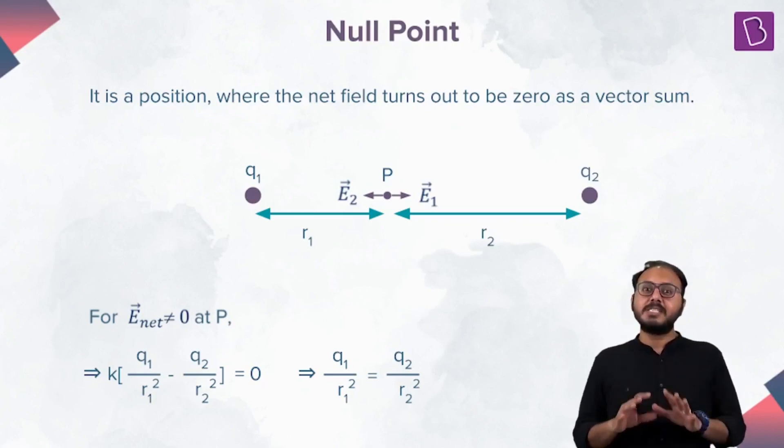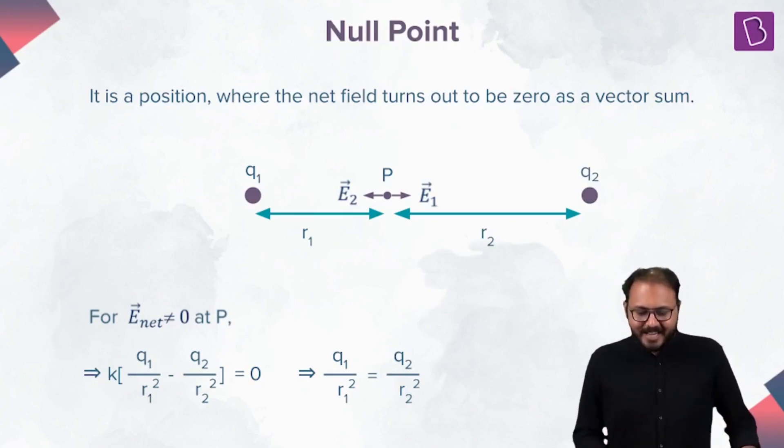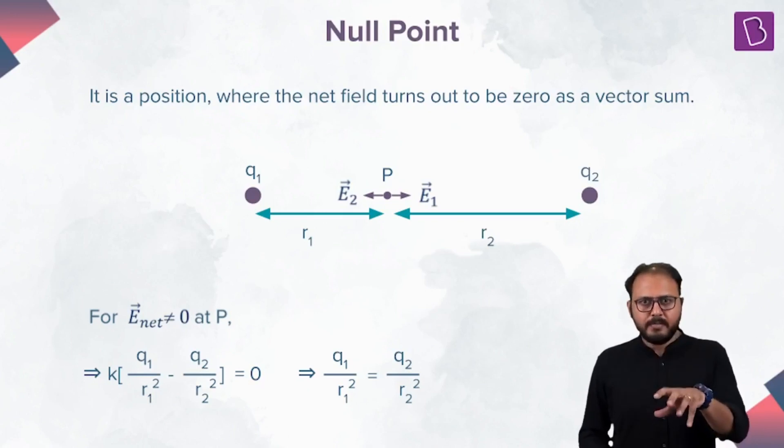Let us understand this concept mathematically now. It is a position where the net field turns out to be zero as a vector sum. At equilibrium, net force is zero or net field is zero.